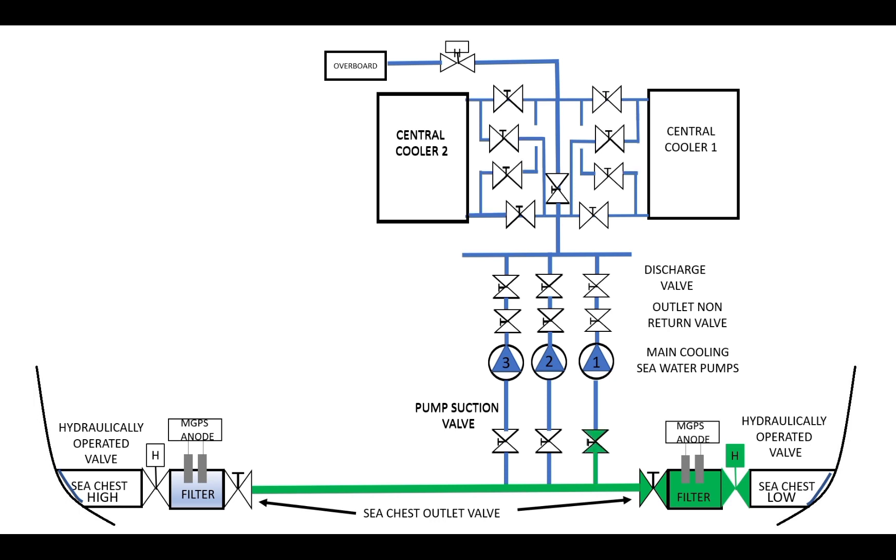From main crossover line, water will pass through suction valve due to static pressure. Main sea water pump will transport the sea water for high pressure, passing outlet non-return valve and discharge valve. Then the water will flow from the bottom of the central cooler until it reaches the outlet valve of the cooler before going overboard.